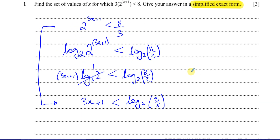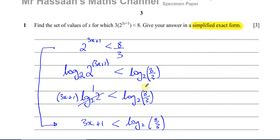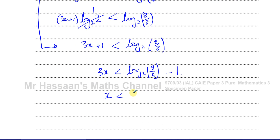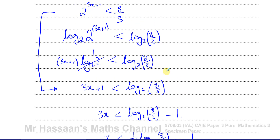These intermediate steps don't really need to be written down — I'm doing them for explanation. We can subtract 1 from both sides: 3x is less than log base 2 of 8 over 3, minus 1. Then dividing both sides by 3, we get x is less than one-third times log base 2 of 8 over 3, minus one-third. We can also write this as (log base 2 of 8 over 3, minus 1) all over 3. Both forms are perfectly fine.